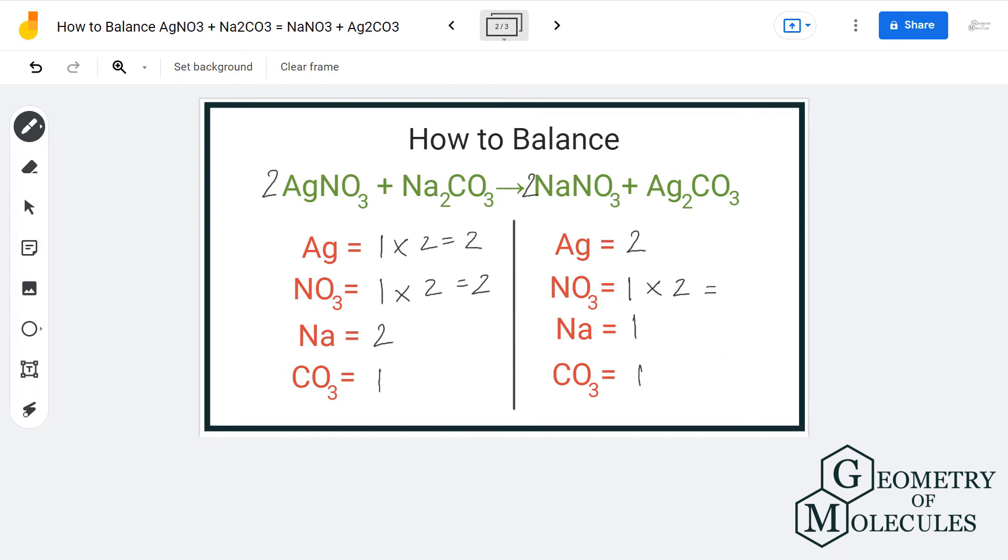Adding a coefficient 2 over here will also help us balance the number of sodium atoms. Now we have two sodium atoms on both reactant and product side, and two NO3 groups on both these sides. Now if you look at this equation, it is balanced.